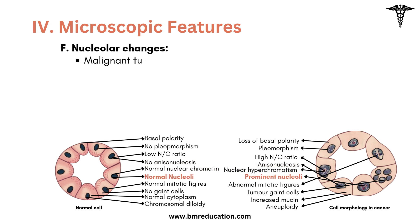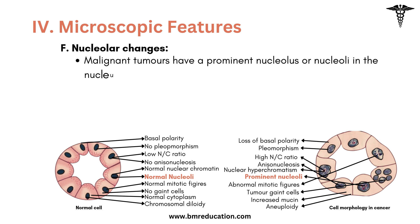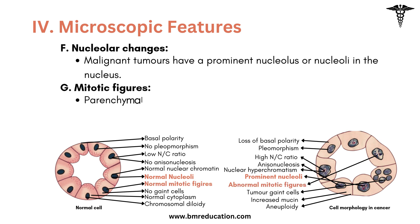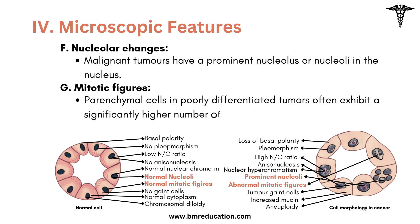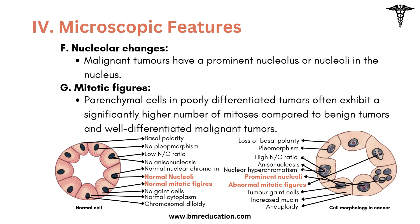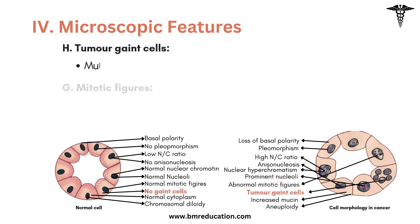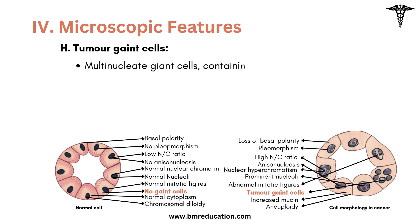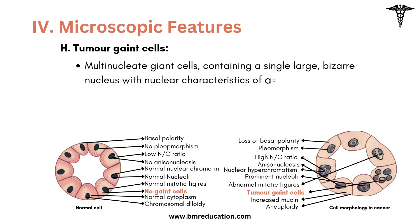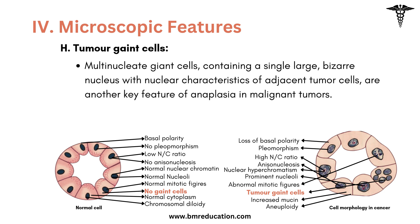The next feature is nucleolar changes: malignant tumors have a prominent nucleolus in the nucleus. The next feature is mitotic figures. The parenchymal cells of poorly differentiated tumors often show large numbers of mitoses compared with benign tumors and well-differentiated malignant tumors. Tumor giant cells are another feature of anaplasia — multinucleate giant cells containing a single large, bizarre nucleus with nuclear characteristics of adjacent tumor cells are a key feature of anaplasia in malignant tumors.